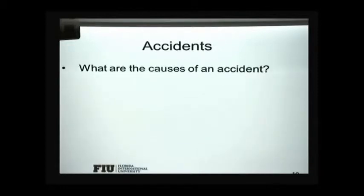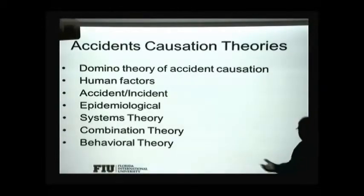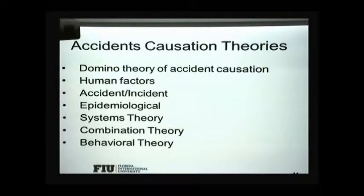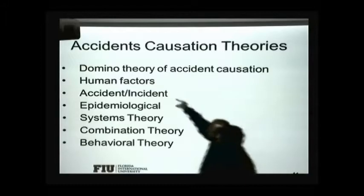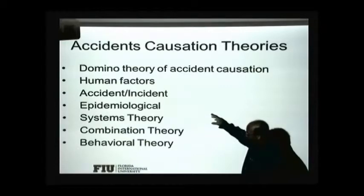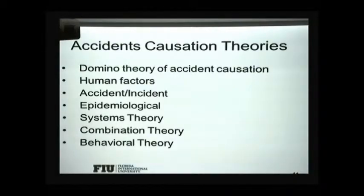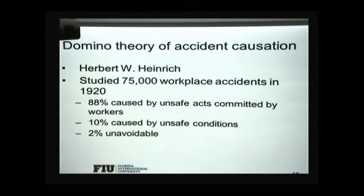What do you think are the causes of an accident? We're going to look into accident causation theory — what makes an accident and how can it be prevented. The theories include the domino theory, human factors, accident-incident theory, epidemiological theory, system theory, combination theory, and behavioral theory. All of these look into what causes accidents and how we can prevent them.